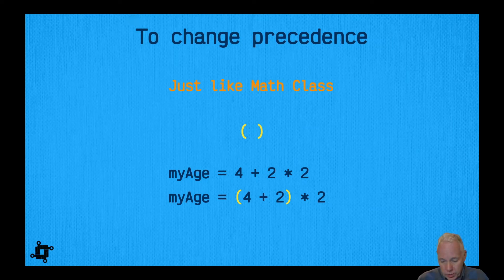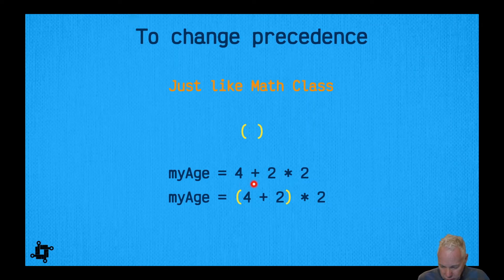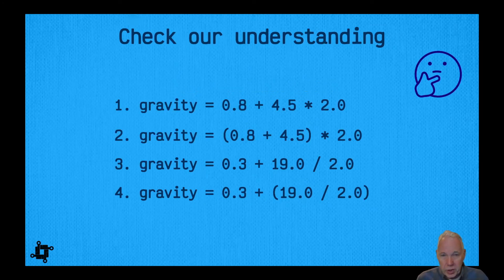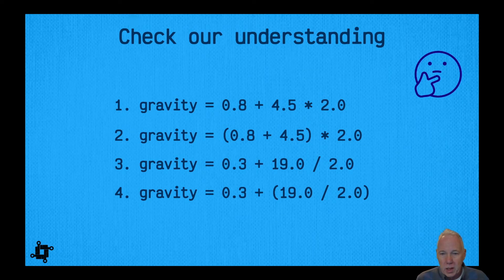For example, if I'm trying to calculate myAge at 16, 2 * 2 is 4, that's correct, and it did that first, plus 4 would give me 8, but that's not the correct answer. So really what we wanted to do is take 4 and 2 and add them together first, so we put those in parentheses. That's done first, this gives you 8 * 2, which is 16, and now it works.